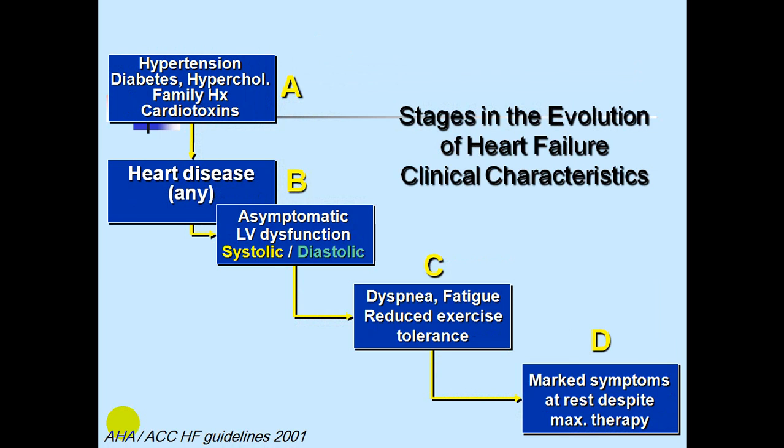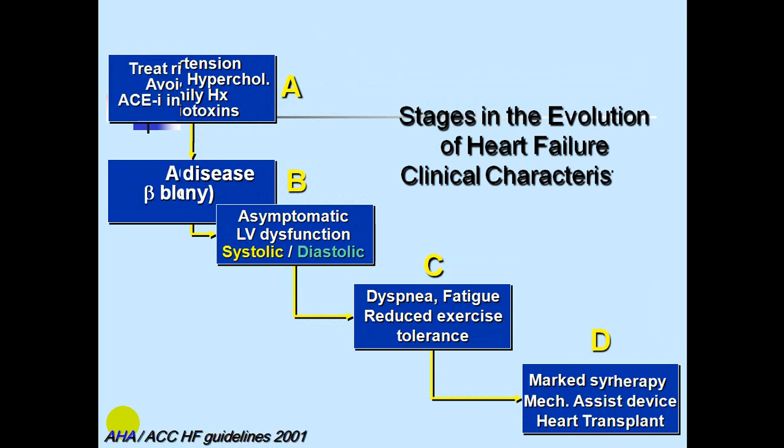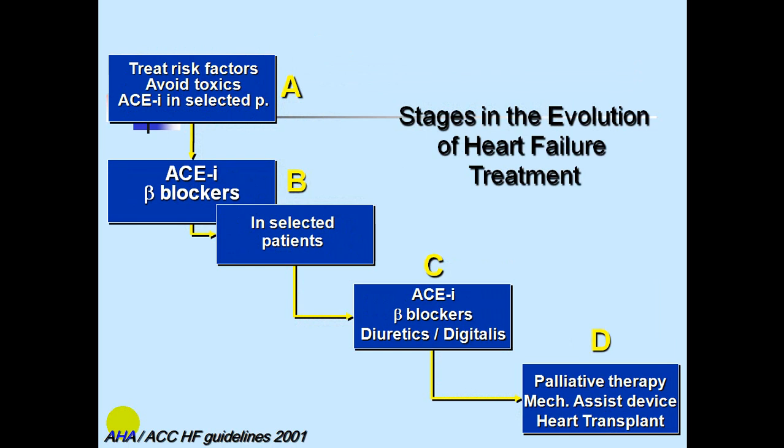Regarding treatment planning: Stage A requires treating risk factors and avoiding toxins, with ACE inhibitors in some patients. Stage B uses ACE inhibitors and beta blockers in selected patients. Stage C needs full treatment including ACE inhibitors or ARBs, diuretics, digitalis, and so on. Stage D requires palliative therapy, mechanical assistance, device treatment, and even heart transplantation.